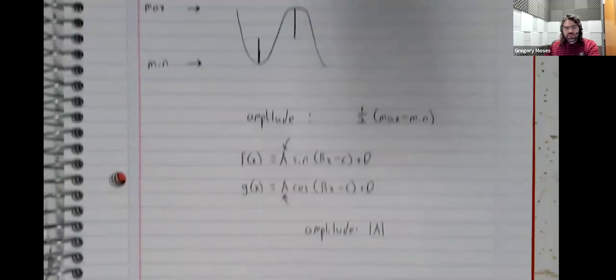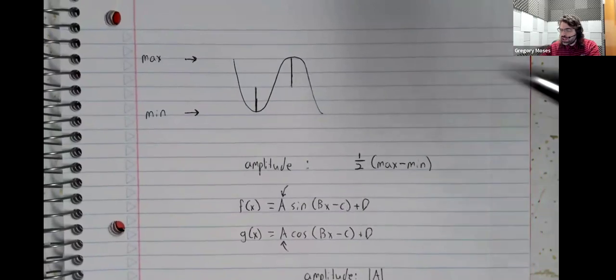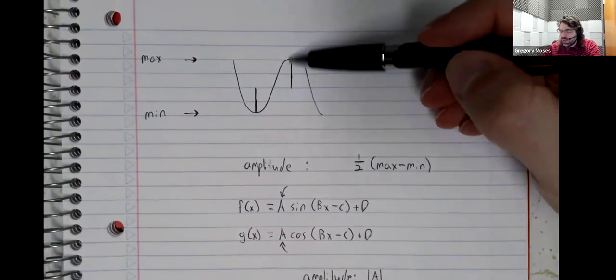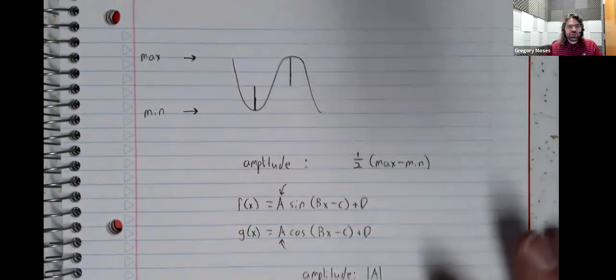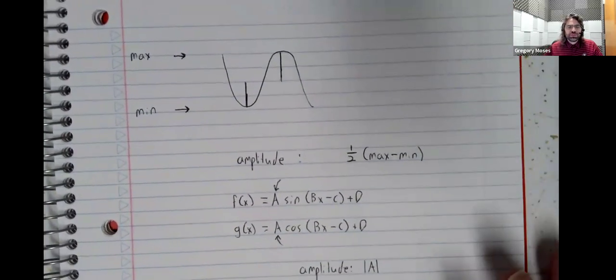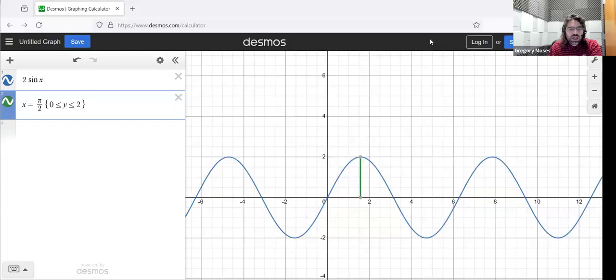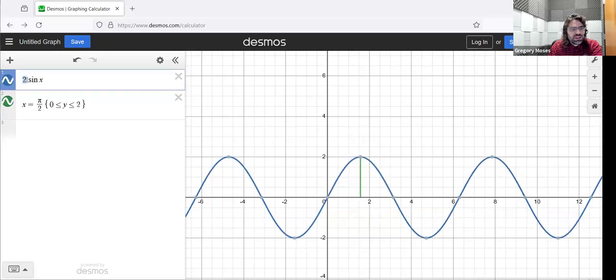Looking at the picture here where I said this line segment gives the amplitude, I've drawn it in to this graph. You see it starts at zero and goes up to two. And indeed, two is the amplitude.